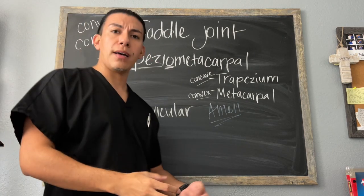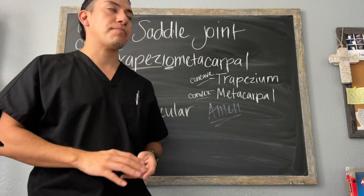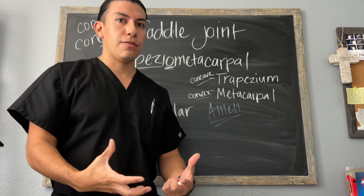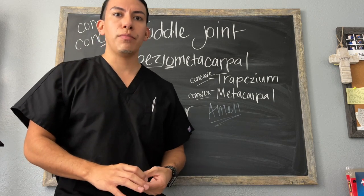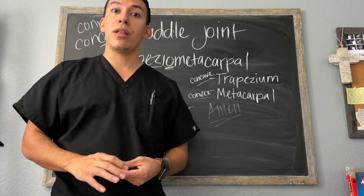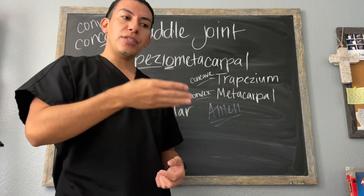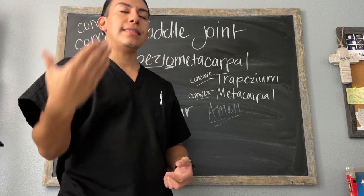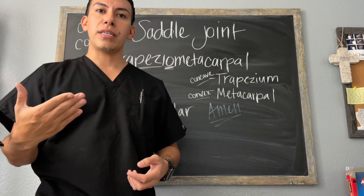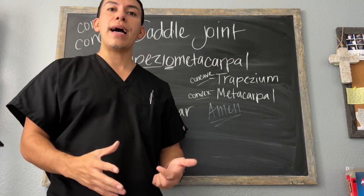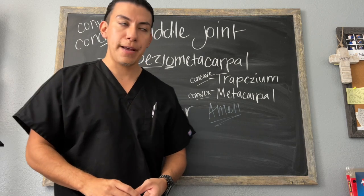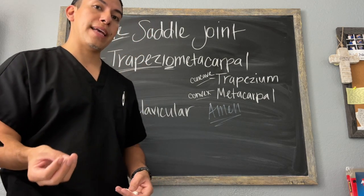Now, does a ball-and-socket joint also allow for circumduction? Yes, it does. However, a saddle joint is limited — it's not like a ball-and-socket joint where we can do a wide range of movements. But with flexion and extension, and adduction and abduction, those movements combined allow for circumduction. Make sure you understand that distinction.